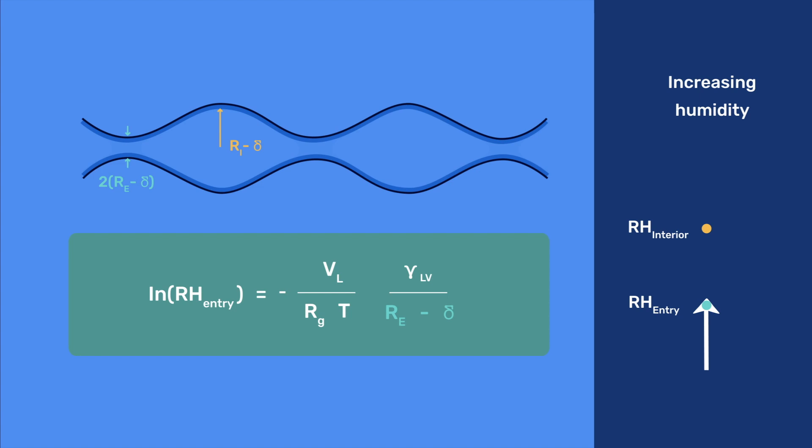This happens when the relative humidity satisfies natural log of RH entry condensation equals minus VL over RT times gamma LV over R entry minus delta. As relative humidity increases beyond RH entry condensation, the radius of the meniscus in the entryway continuously increases.